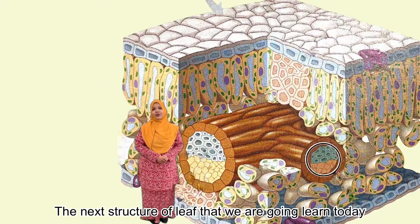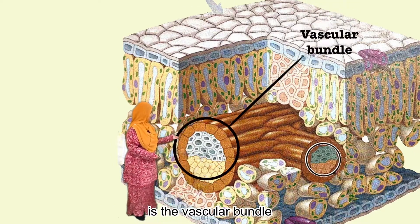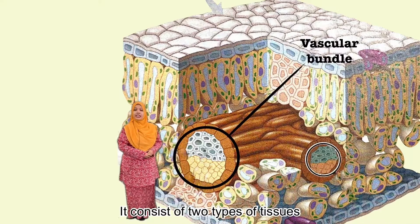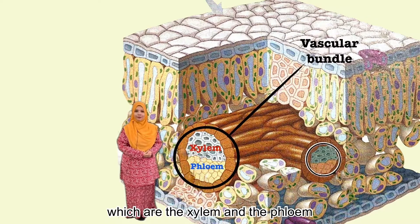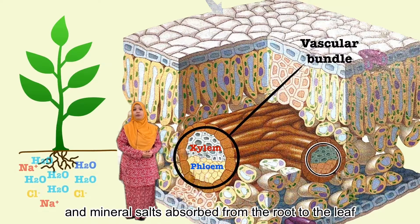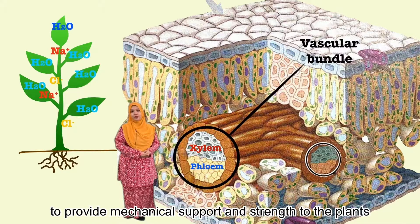The next structure of the leaf we are going to learn is the vascular bundle. The vascular bundle is a part of the transport system in a plant. It consists of two types of tissues: the xylem and the phloem. Xylem is responsible for transporting water and mineral salts absorbed from the root to the leaf. Xylem's walls are lignified and thickened to provide mechanical support and strength to the plant.